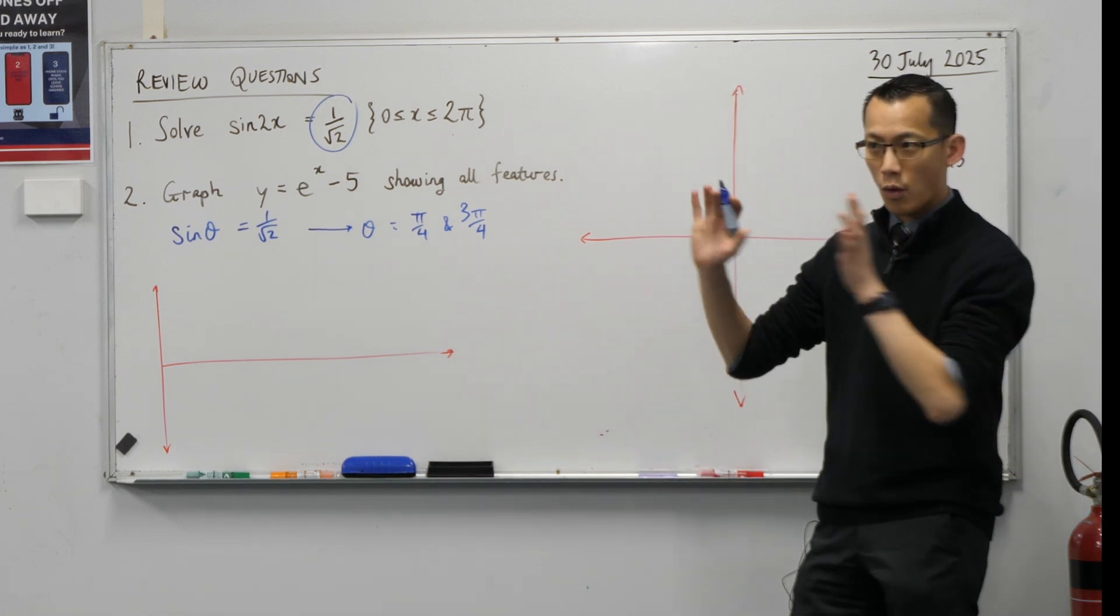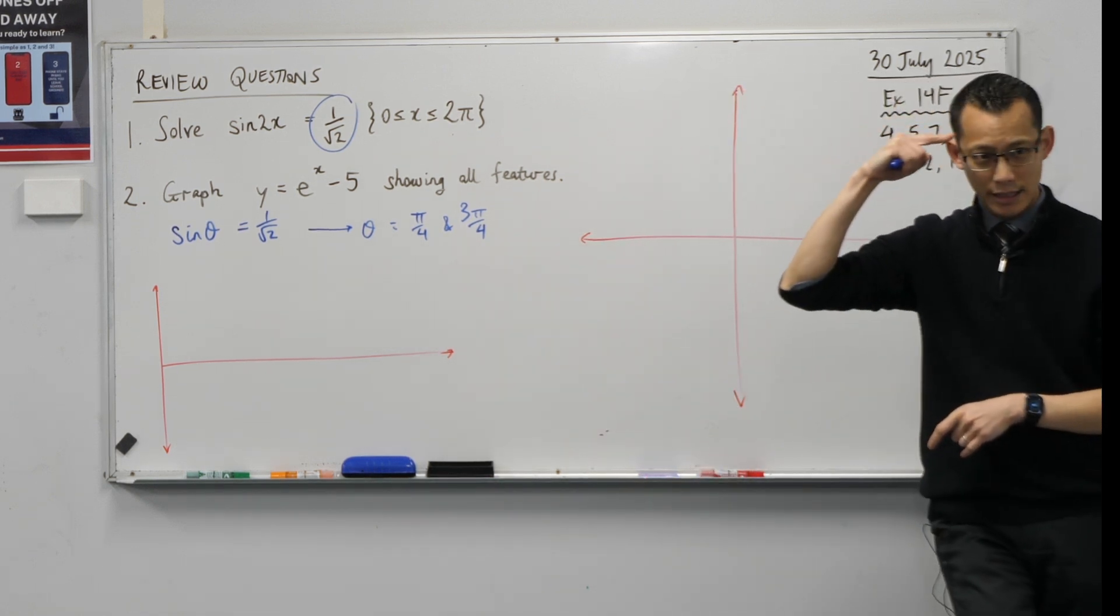Pi on 4 and 3 pi on 4. Okay, now, well done if you got there. If you're not the kind of person who was like, oh, I instantly saw that, right?